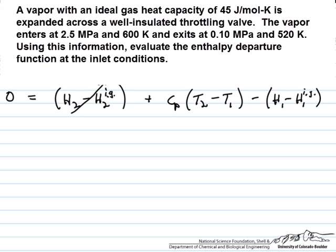That simplifies our life considerably, so we can now just plug in values. Zero equals the heat capacity of the ideal gas, which is 45 joules per mole Kelvin, multiplied by the temperature difference, the temperature drop in this case, which is 520 minus 600 Kelvin.